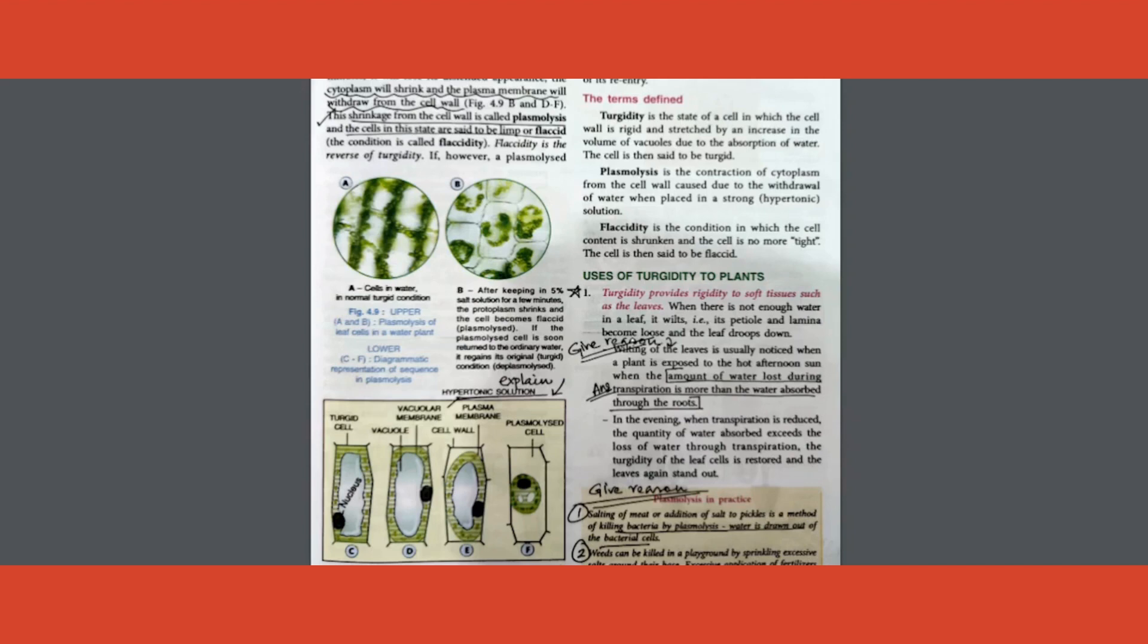Coming down to this part, from here you will get a lot of give-reason questions. Question number one: on a very hot sunny day, you see leaves wilting, and by evening the leaves restore their condition. Give reason. Another two-mark give-reason: why do we use salting or making of pickles as a conservation method? The reason is plasmolysis happens whenever you add anything into a salty solution. Salty solution is hypertonic solution. So plasmolysis of the bacterial cell happens, making bacteria to die.